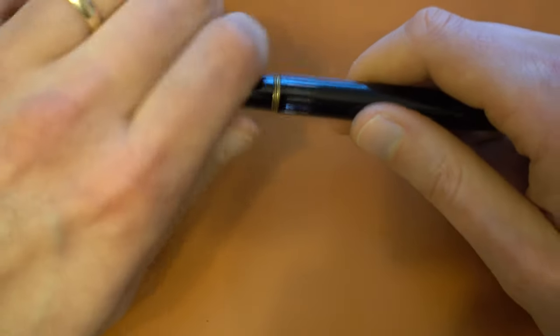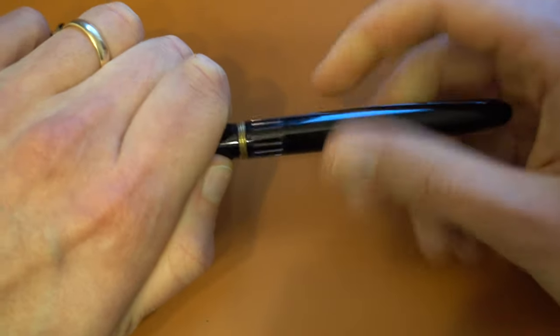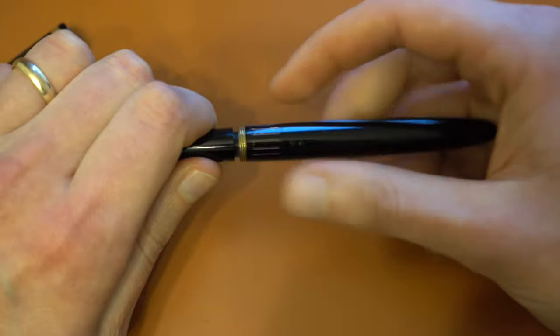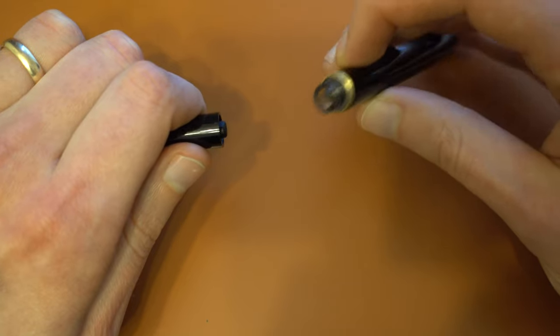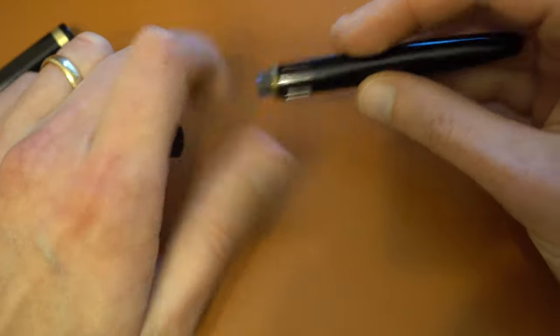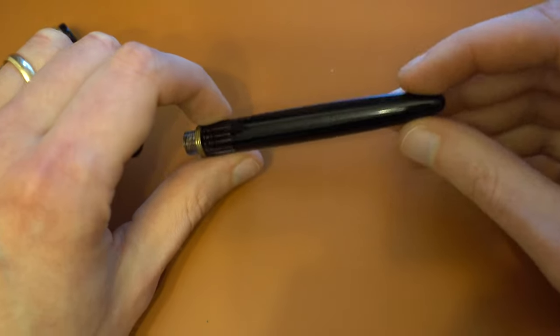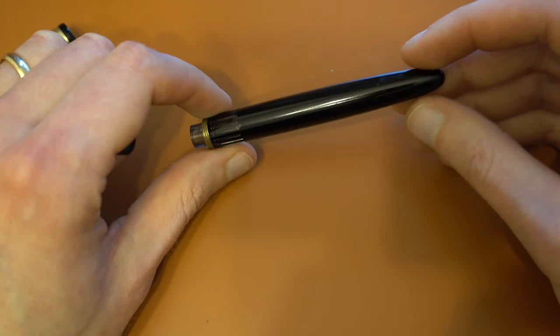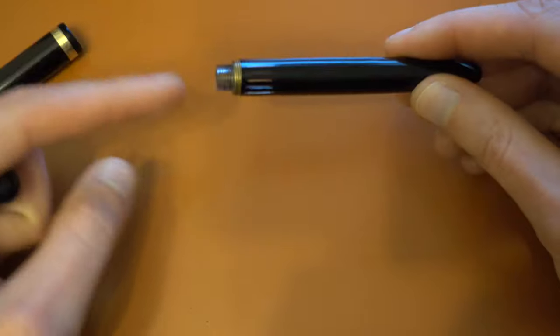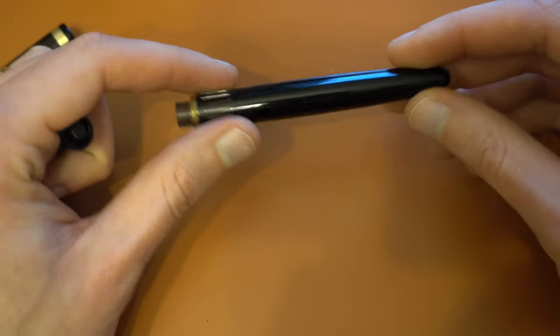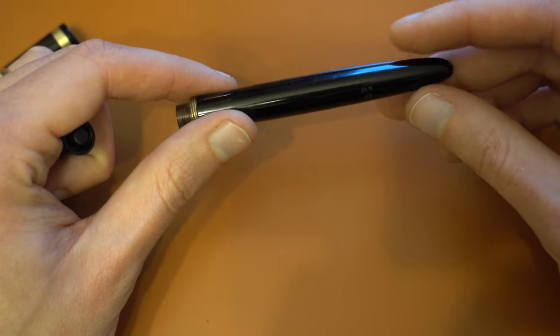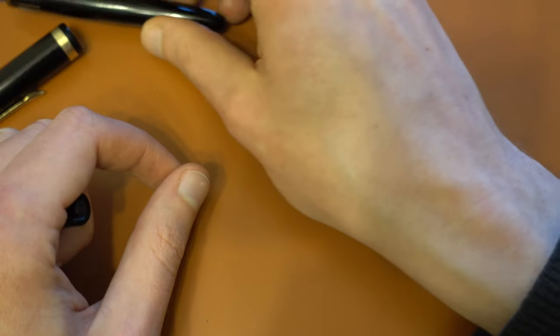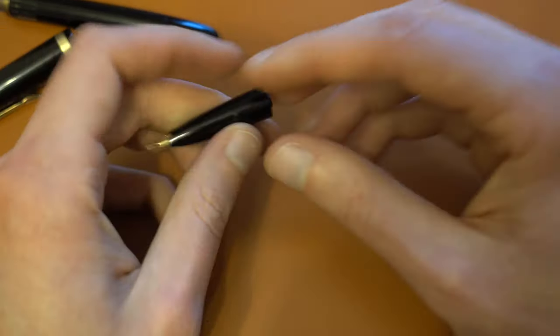And the section comes off by simply screwing it off. Like this. So you can access the piston easily. So I didn't have to take the piston apart so I don't know how do you do it. If you knock it out from here or if it's threaded. And if it's threaded I don't know if the threads are left handed or right handed.